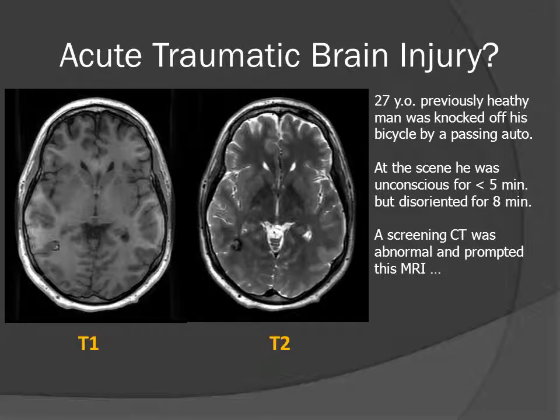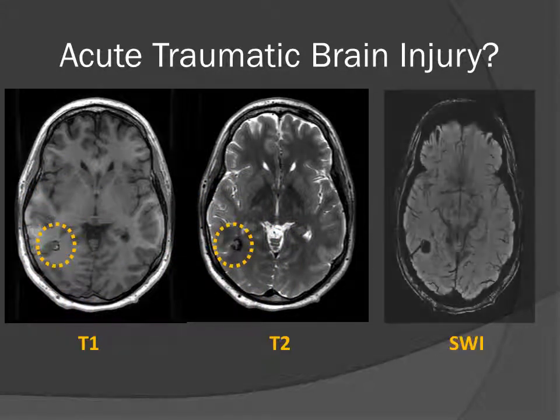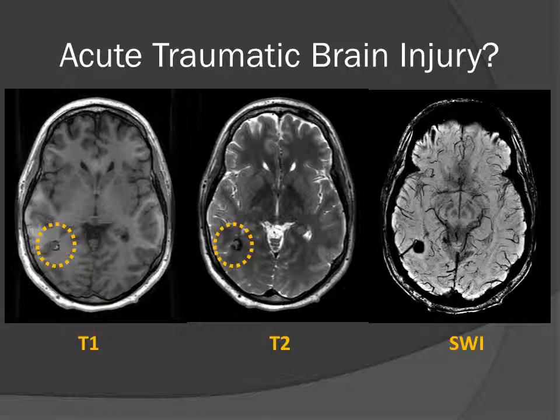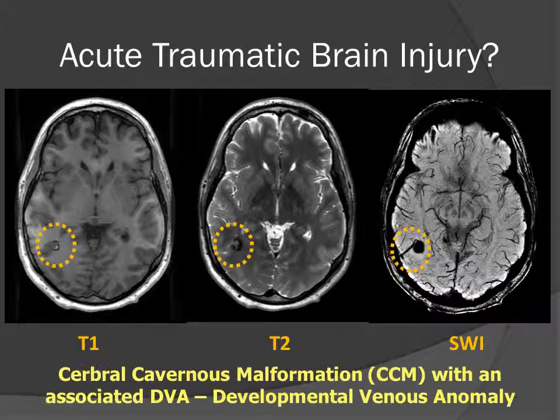On the T1 and T2-weighted images, we see a heterogeneous lesion, both black and white at the same time, without any apparent mass effect. This is suspicious for a cerebral cavernous malformation, and not the sequela of acute head trauma. When we do the susceptibility-weighted image, we see a linear structure coming off the edge of this rounded mass. This is therefore most likely going to be a cerebral cavernous malformation with an associated DVA, or developmental venous anomaly.